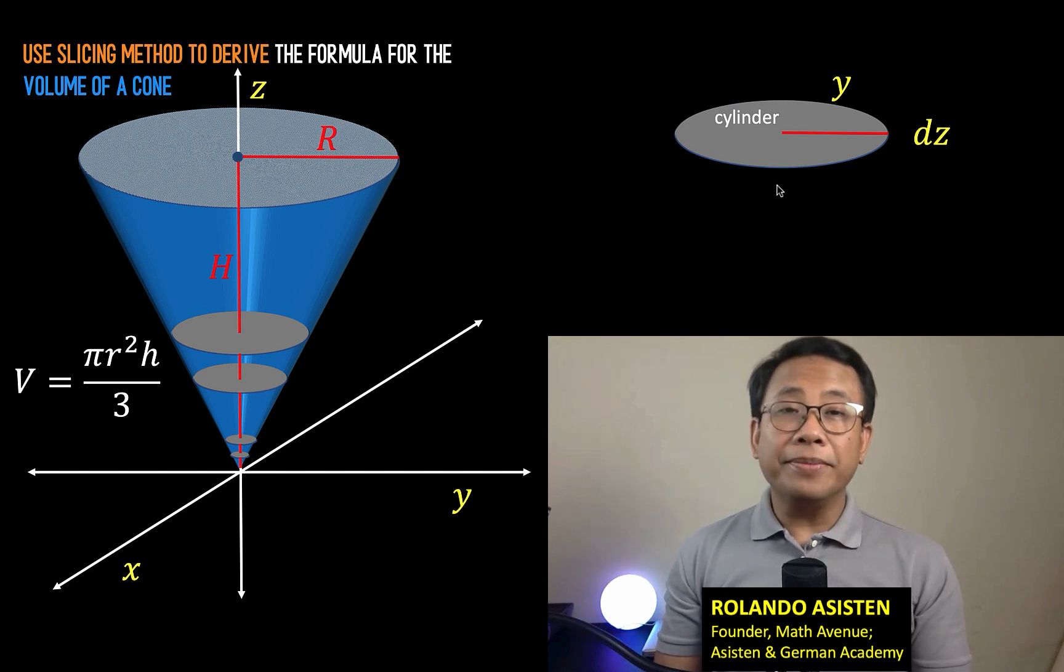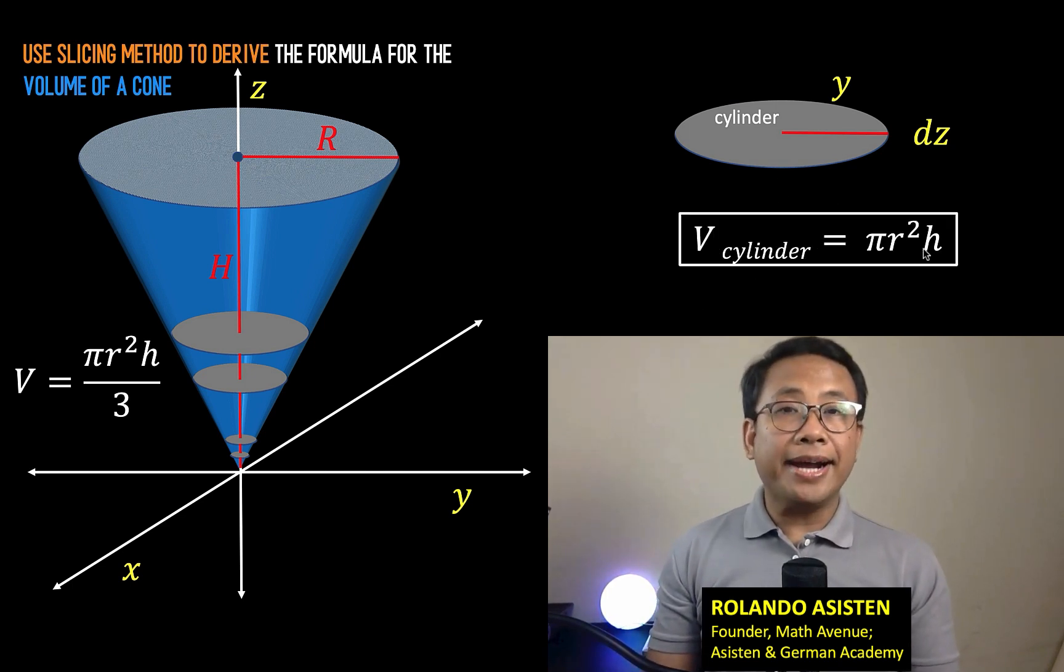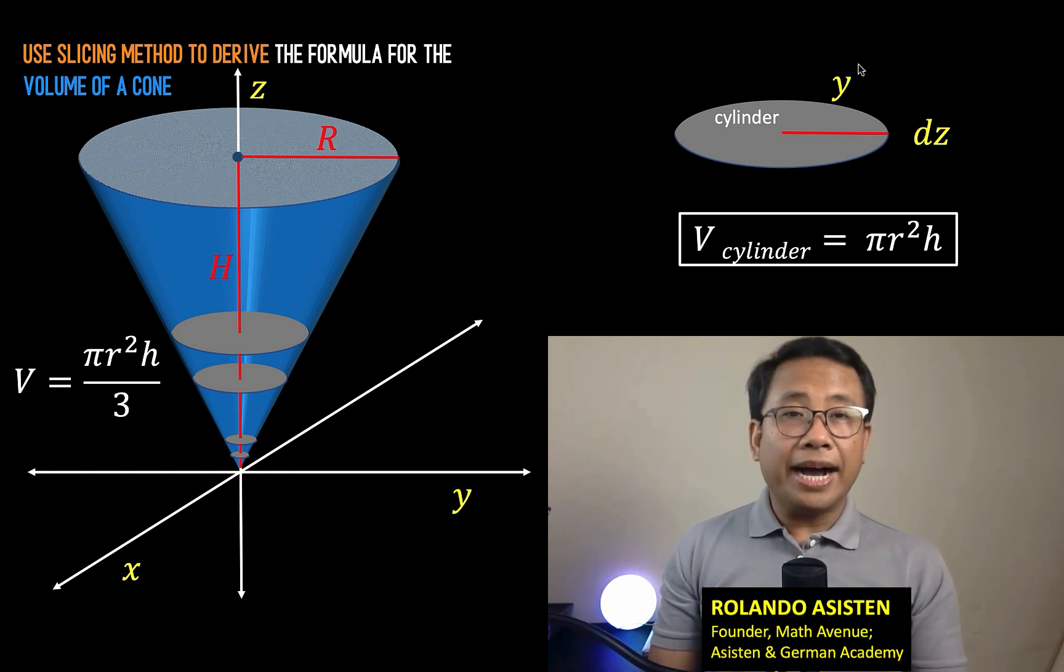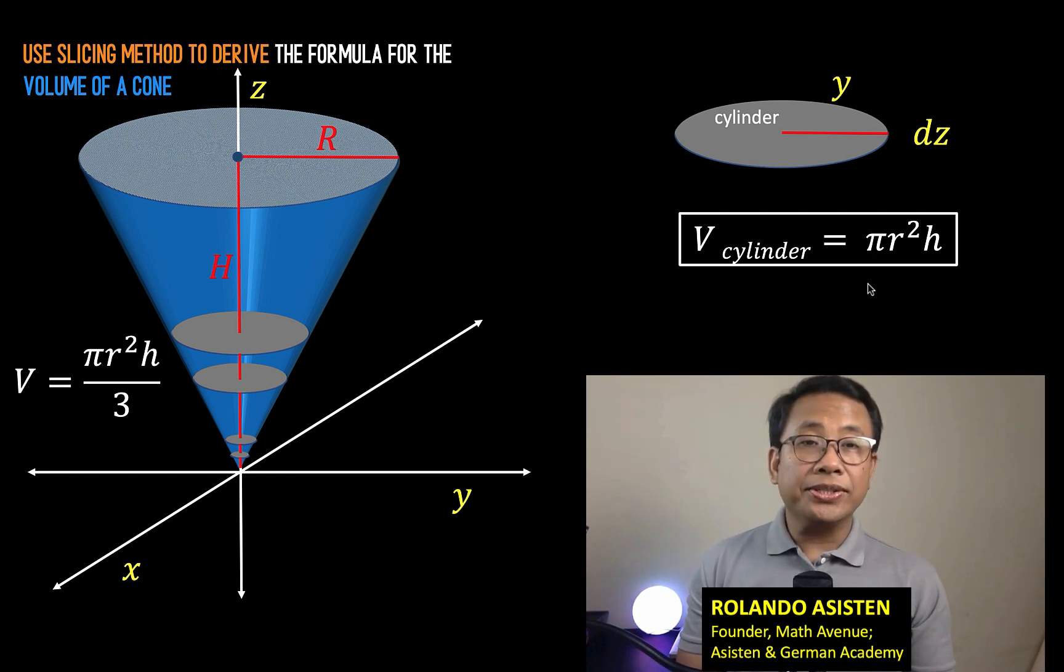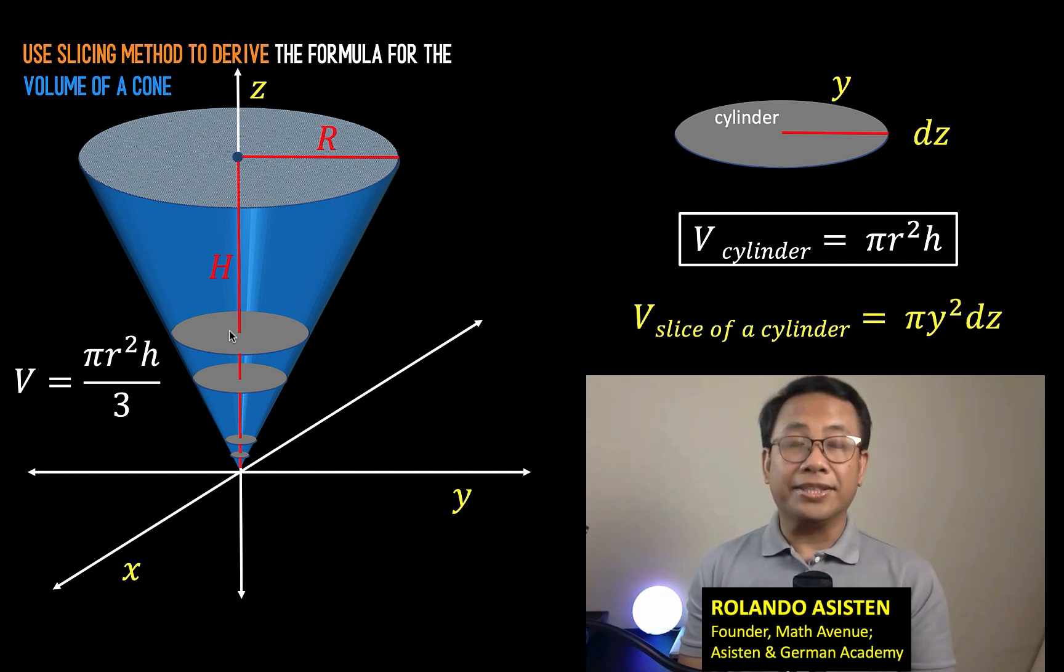Let's recall the formula for the volume of a cylinder: the volume of a cylinder is equal to π r² h. In here, our r is this radius y. So let's substitute y for r to have π y² dz as our representation for the volume of this circular disk that we sliced from this cone.